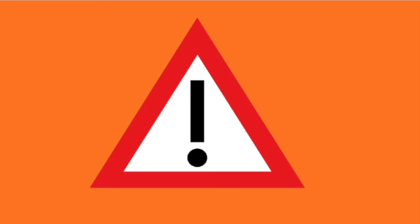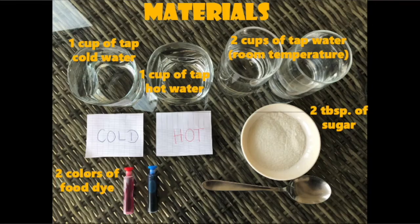Please note that for this video you will need parental assistance to warm up water. For this experiment we're going to need one cup of cold tap water, one cup of hot tap water, two cups of water at room temperature, two tablespoons of sugar, and two different colored dyes. Please make sure they're from the same brand.